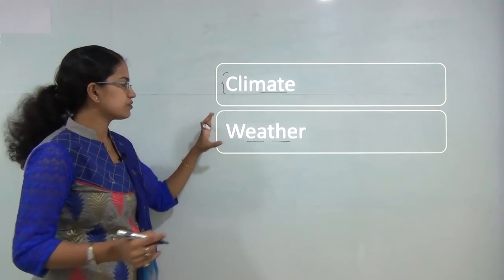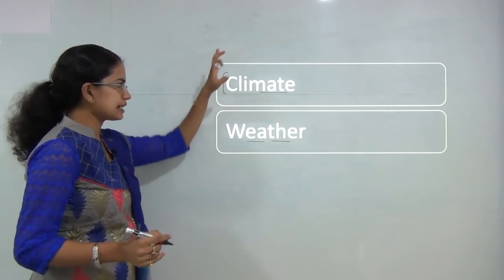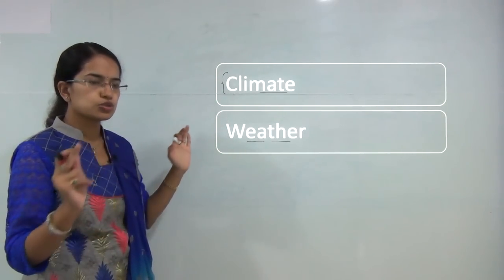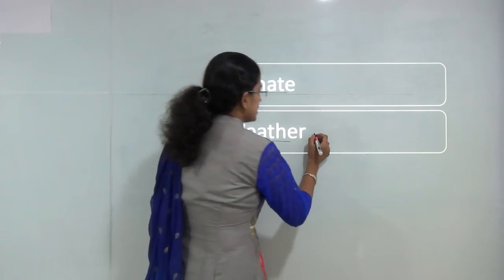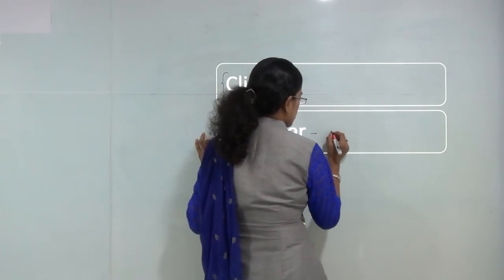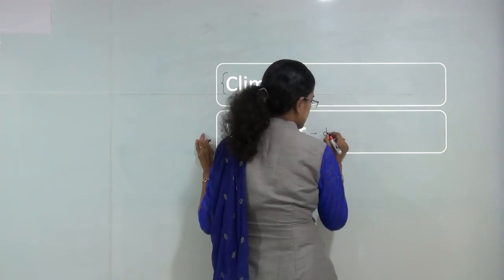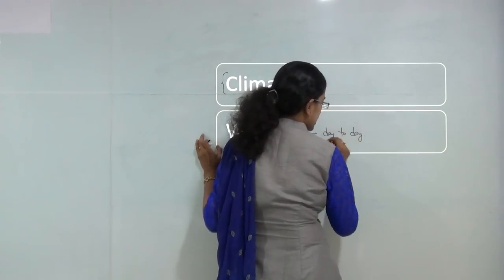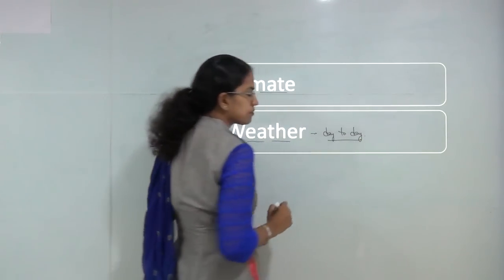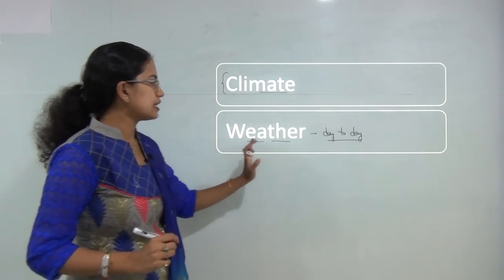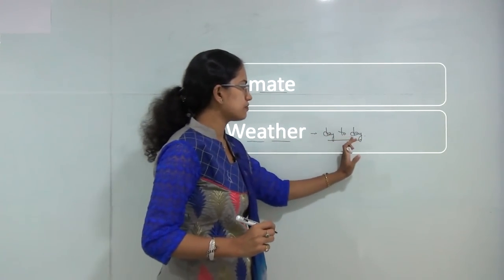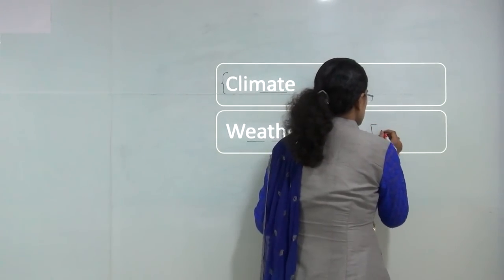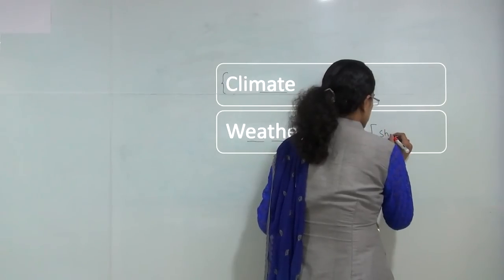Now what is the difference between weather and climate? They appear very similar but there is a huge difference between the two. Weather is a kind of day to day variation in the temperature, pressure, humidity or any other atmospheric phenomena. It is short term in nature.